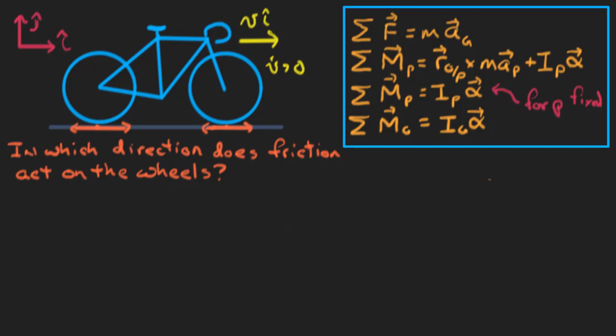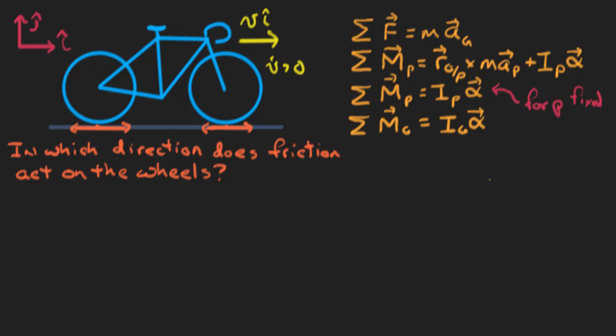What I want you to do right now is pause the video. Think about it. Construct your argument. Do it for the front wheel first. Once you have the front wheel done, you can unpause. We'll talk about the front wheel and then do it again for the back. Try to answer the question for the front wheel and come back when you are ready.